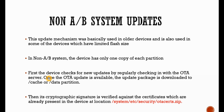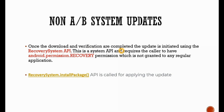How does this OTA update happen? The device will check for new updates by regularly checking into the OTA server. There will be one OTA server and the device will keep continuously checking with that OTA server. Once the OTA update is available, the update package is downloaded to the cache or data partition. Then its signature is verified against the certificates which are already present in the device. There will be an OTA certs.zip file, and the certificates in this are verified with the one being downloaded from the OTA server.